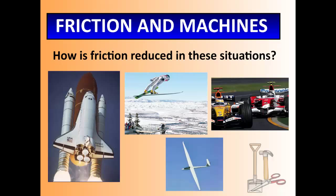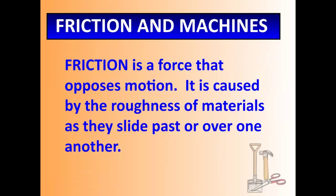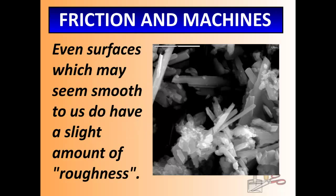I think before we go any further, we need to define friction. Friction is a force that opposes motion. It's caused by the roughness of materials as they slide past or over one another. Some surfaces, even though they feel incredibly smooth to us, are actually quite rough. Take for example this surface of glass underneath an electron microscope. Even glass that feels smooth to our touch is quite rough. Look at this crystalline shape. That is exceptionally rough at a very small particle level.